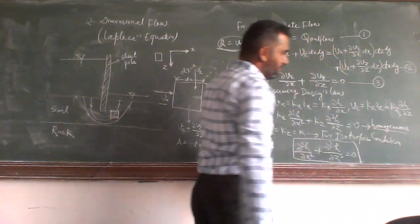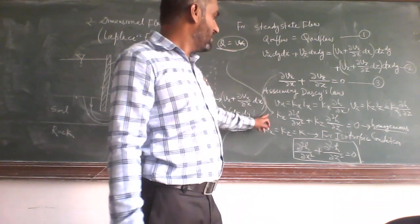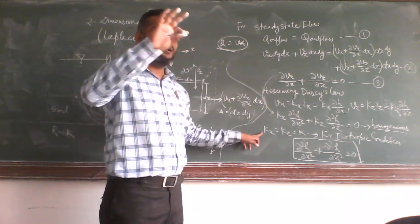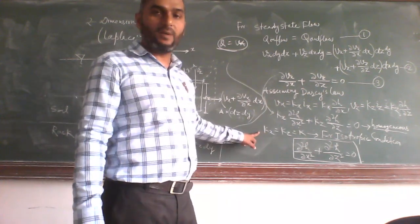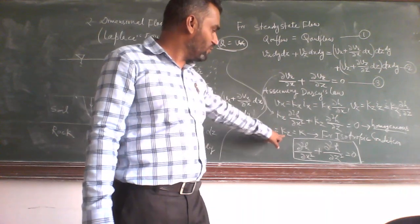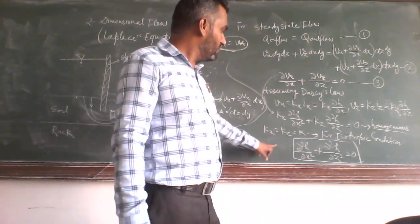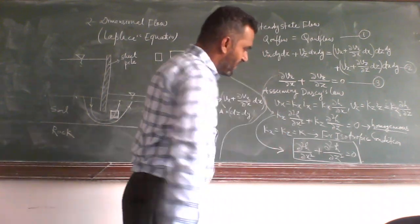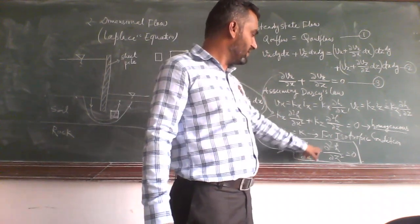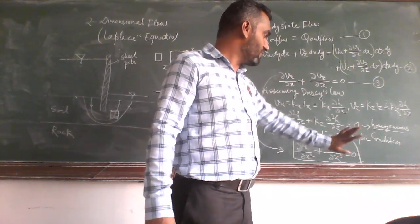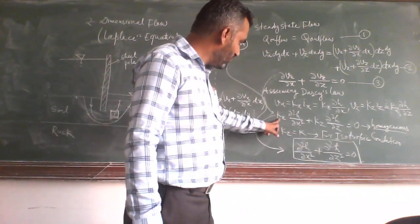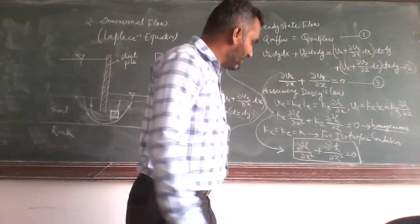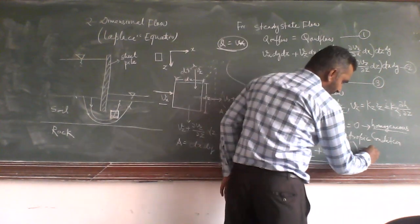Since we assume the soil is homogeneous, if we assume the isotropic condition, means property remains same - here the property is permeability - so kx equals kz equals k. This equation will become del square h by delta x square plus del square h by delta z square equals 0, because kx equals k, kz equals k, it will be cancelled. And this equation is called Laplace equation.